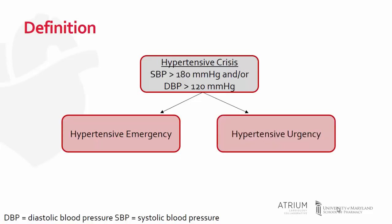Patients with a hypertensive urgency do not have new, worsening, or progressive end organ damage, and those patients can be managed with oral therapy. This includes reinitiation of medications, because one of the more common causes of a hypertensive crisis is non-compliance with medication. Patients can also have their medications further titrated or new medications added to achieve blood pressure goal.